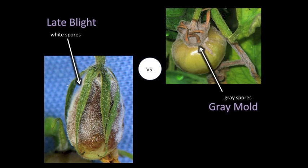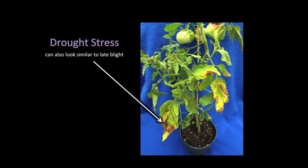In addition, plants that are drought stressed can also have symptoms similar to late blight, but sporulation will not occur when placed in a plastic bag with moist paper towels overnight.